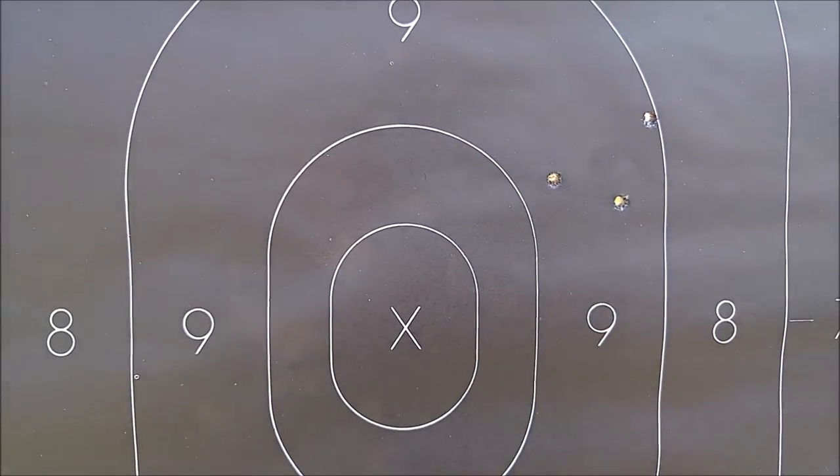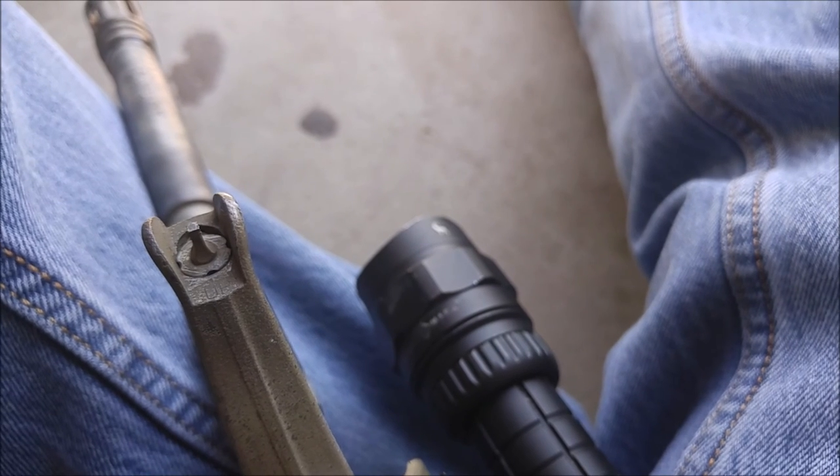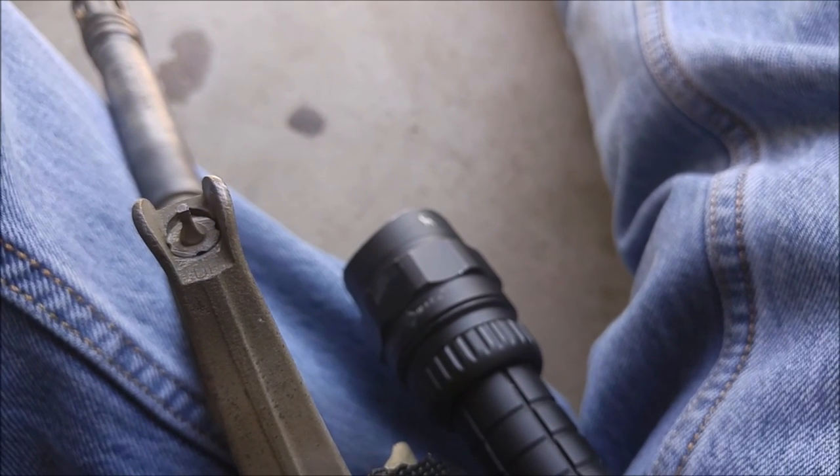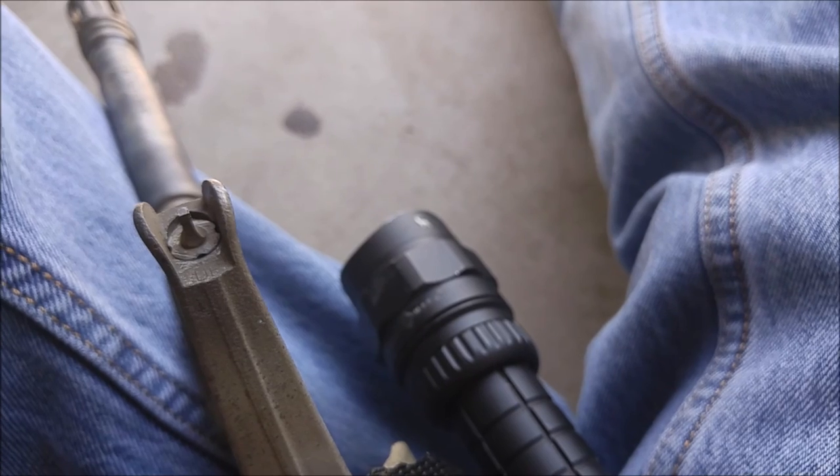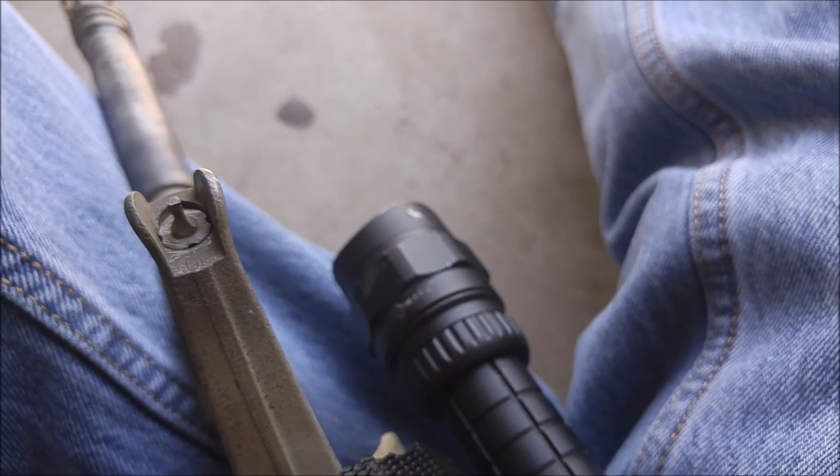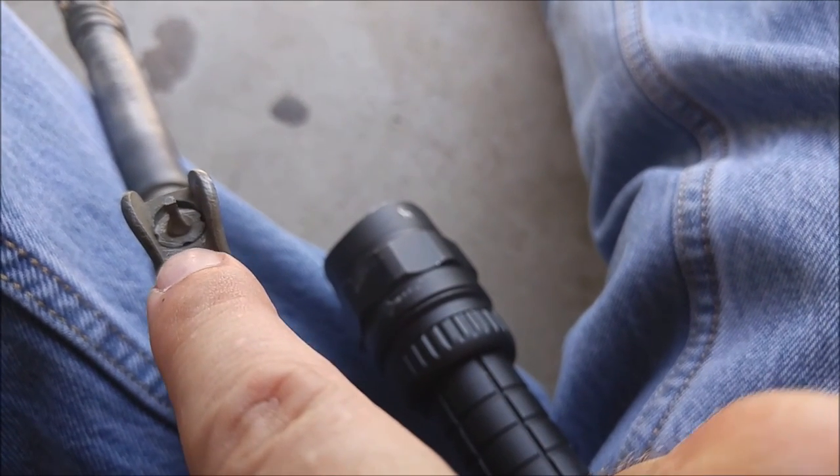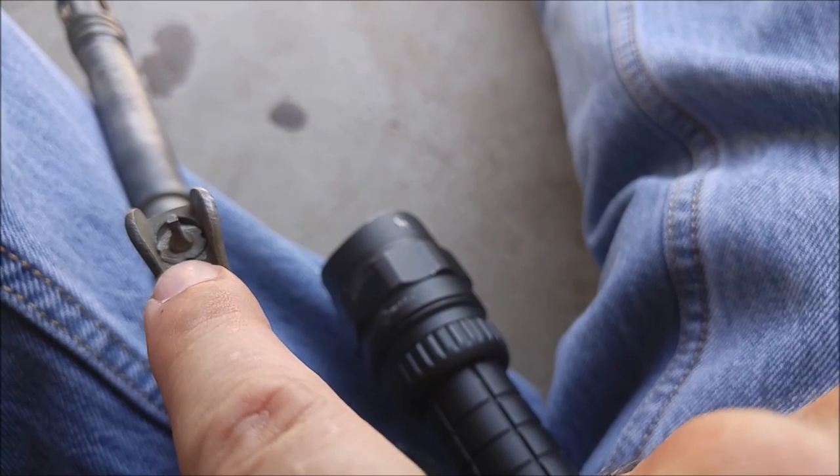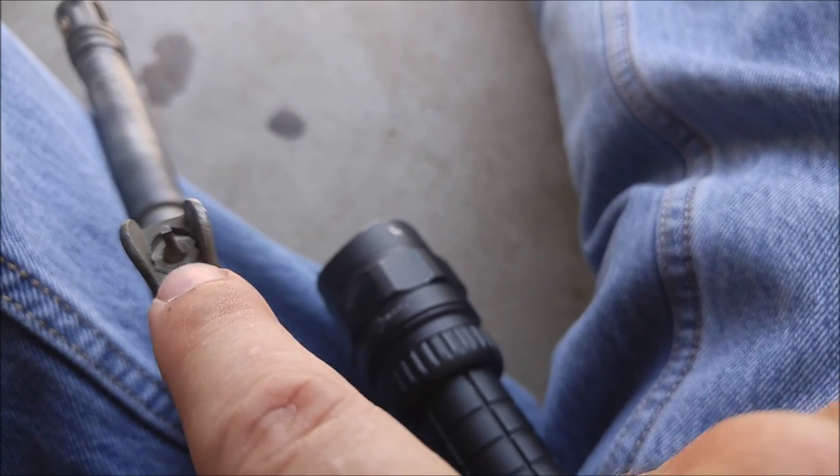We want to move the strike of our round down two and a half inches approximately, so we're going to rotate this front sight post counterclockwise, and that'll raise the front sight.